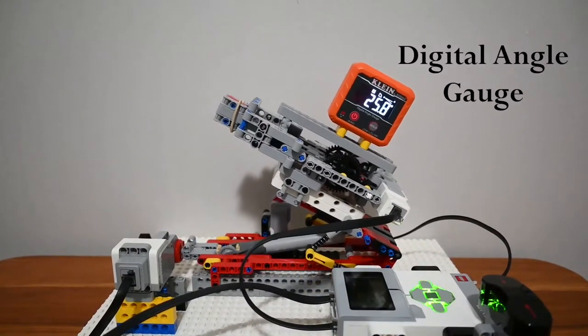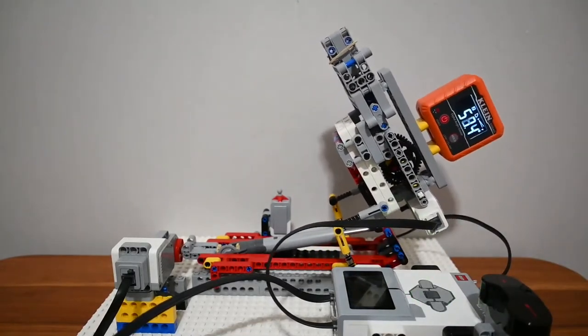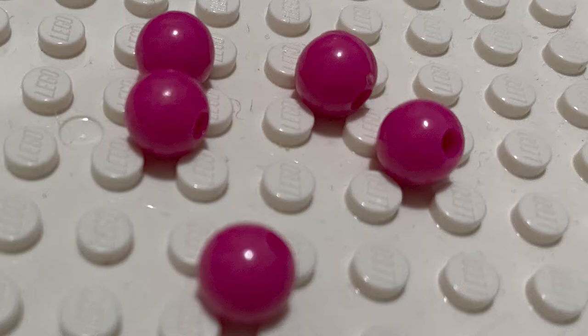Digital angle gauge is placed on top of the gun to cross-check the angle set by the EV3. This is the bullet we will use to fire.